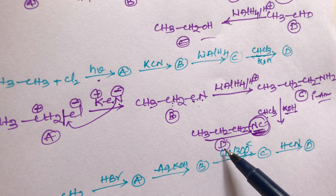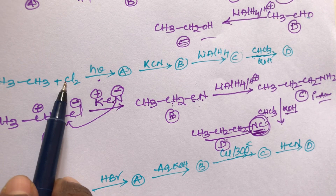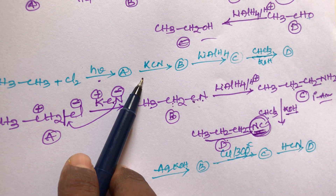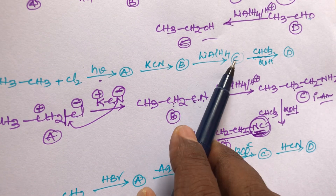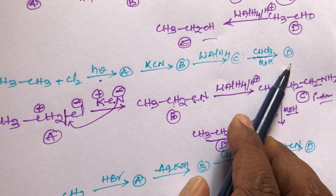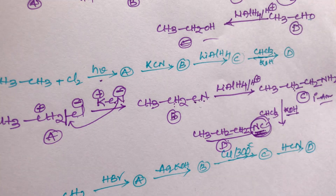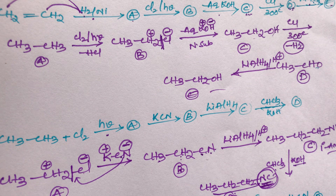In summary for Example 2: Step 1 is free radical substitution. Step 2 (A to B) is nucleophilic substitution. The conversion of B to C is reduction. And the conversion of C to D is the carbylamine test — isocyanide test. If you like this video, please like, share, and comment. Thanks for watching, students!